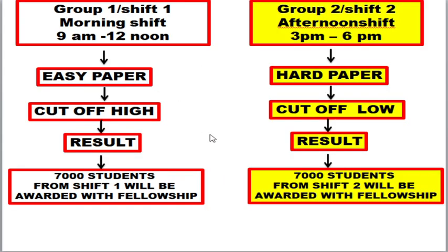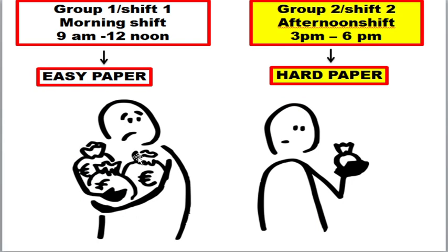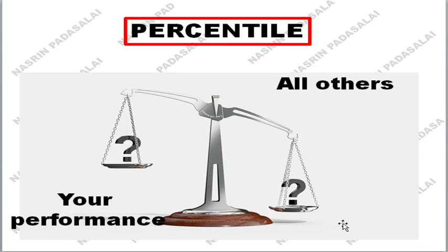Also, if NTA releases separate results, they would be accused of partiality and inequality — since Group 1 had an easy paper, more students would clear the exam, while Group 2 had a tough paper so fewer students would clear it. In India, no one can accept such partiality. That is the reason they incorporated the concept called percentile.